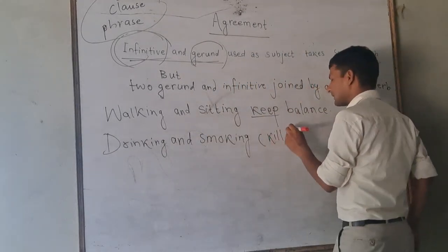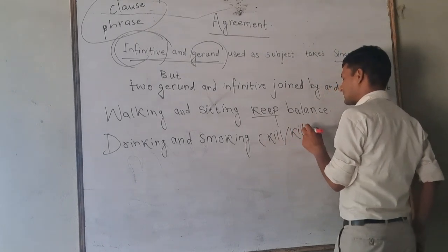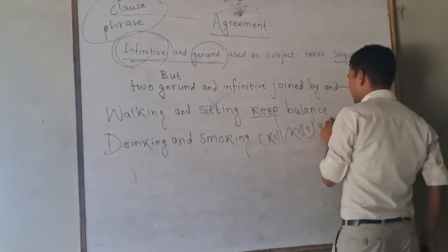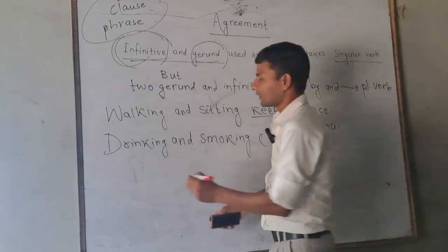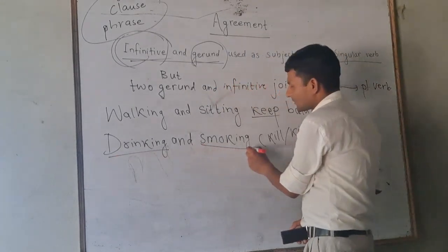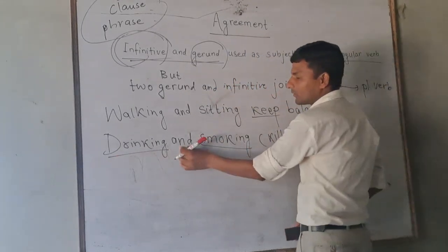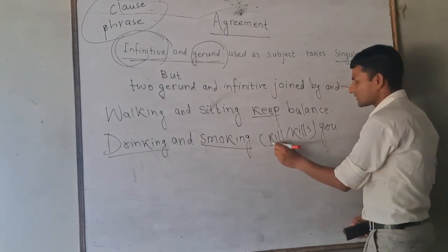Kill. Kills. You denote right. Drinking one gerund, smoking another gerund, both is joined with and, so we use plural verb.